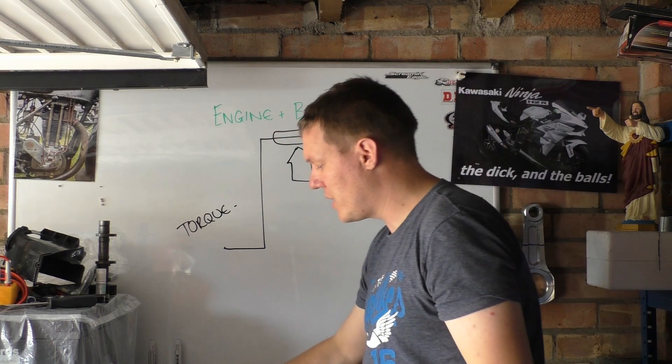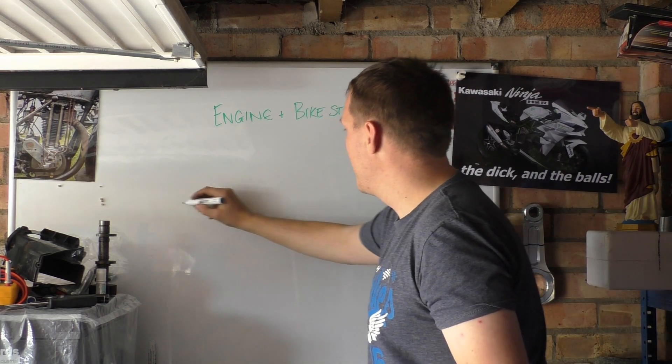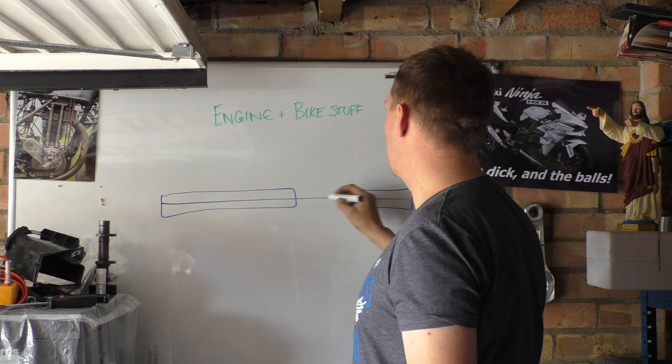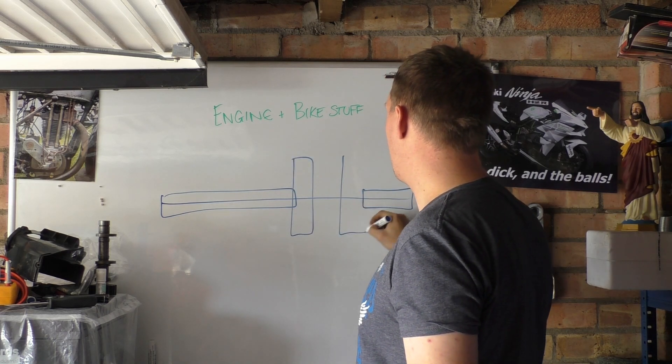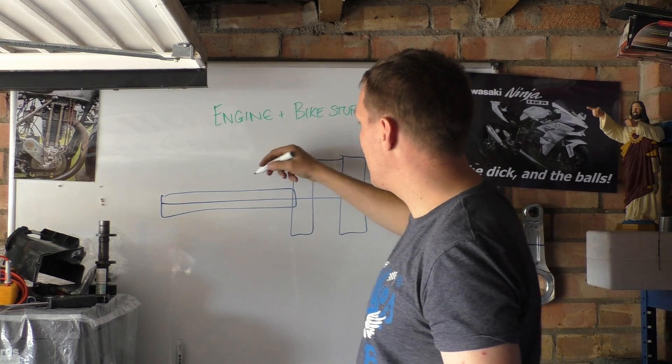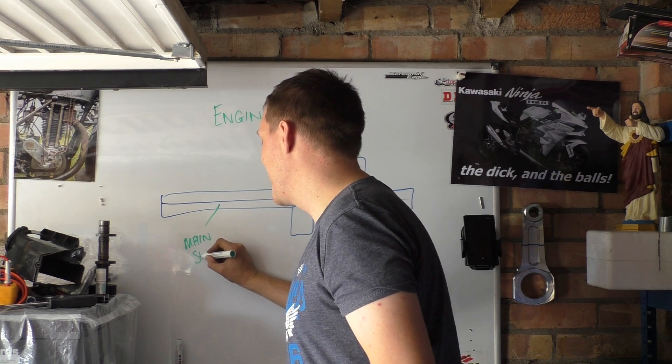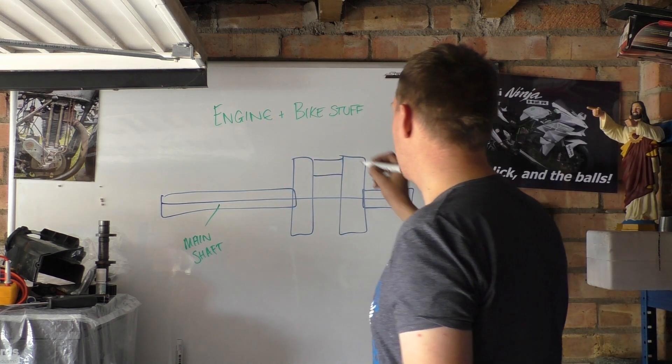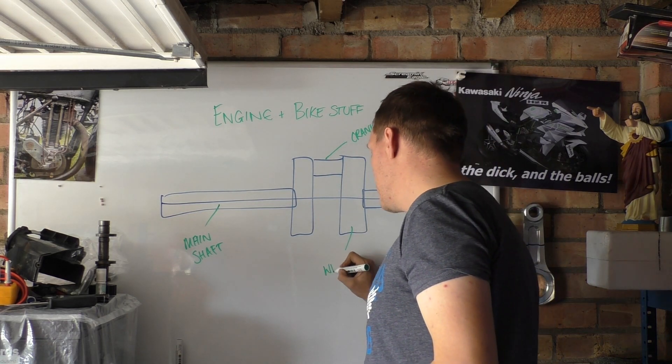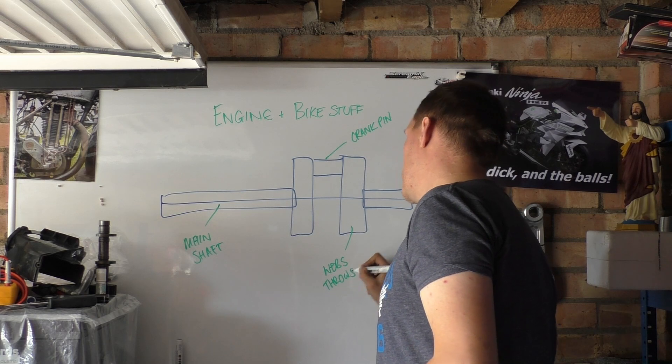So what are these sections called? We'll use the Briggs and Stratton as an example. We have our line through the center, we have our main shaft, we have our webs or throws, and then we have a pin in the middle. This is our main shaft, this is our crank pin, and these are our webs or throws - that's another word you can use for them.